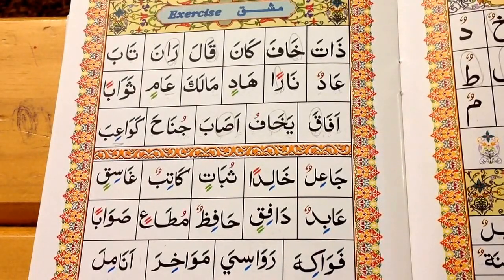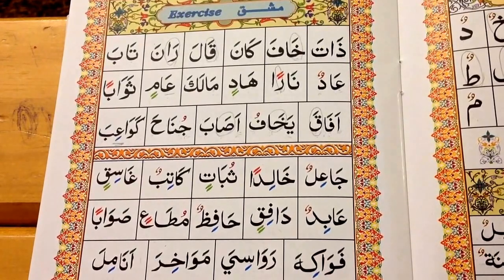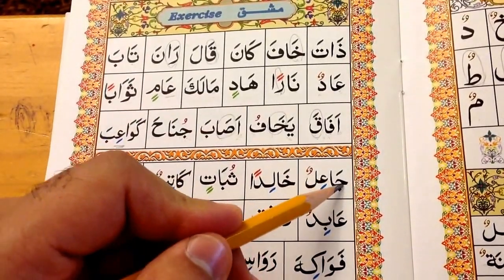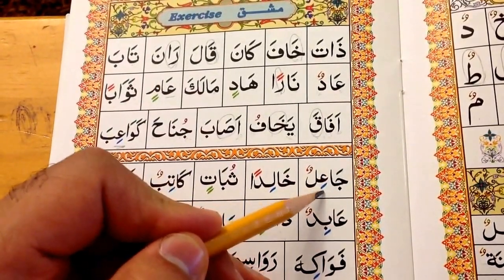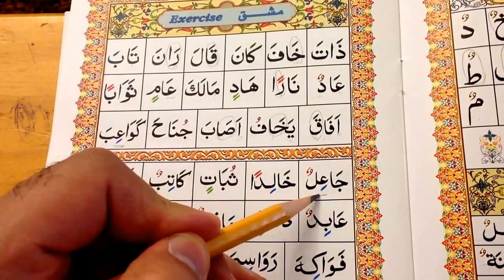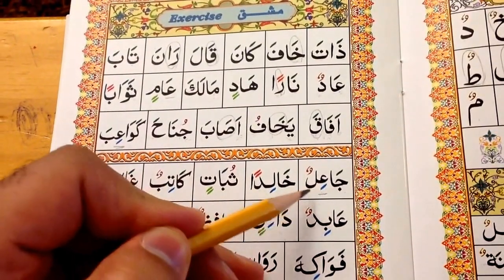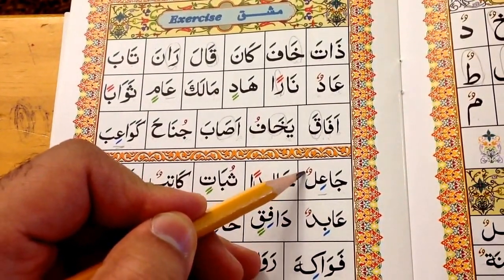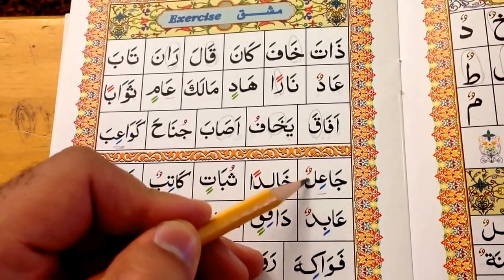Bismillahirrahmanirrahim. Part two of exercise for lesson number ten. Jim alif zhabar, a'in zir'i — jai'i. Lam doh pish lun — jai'i lun.